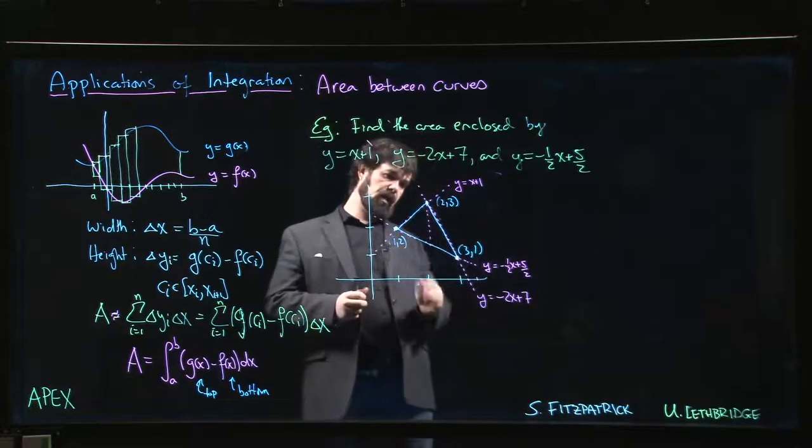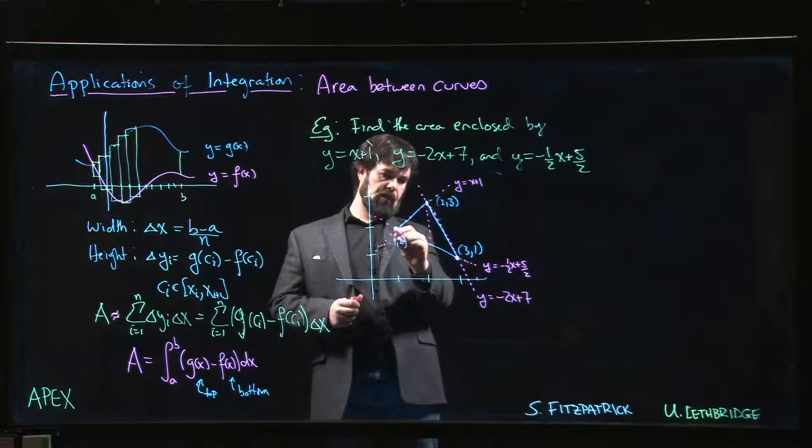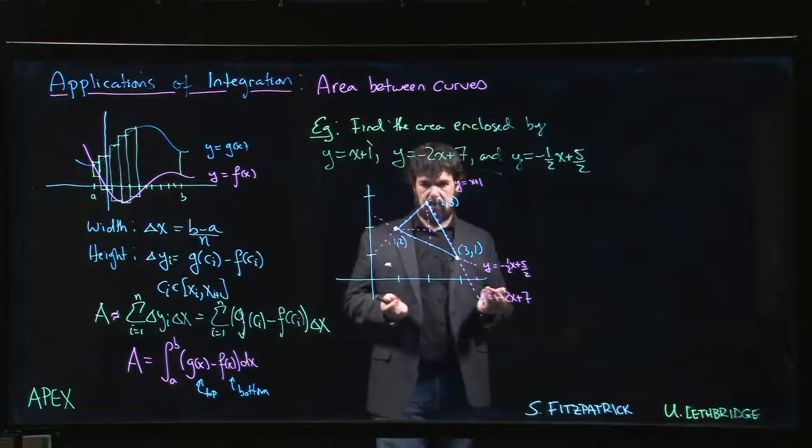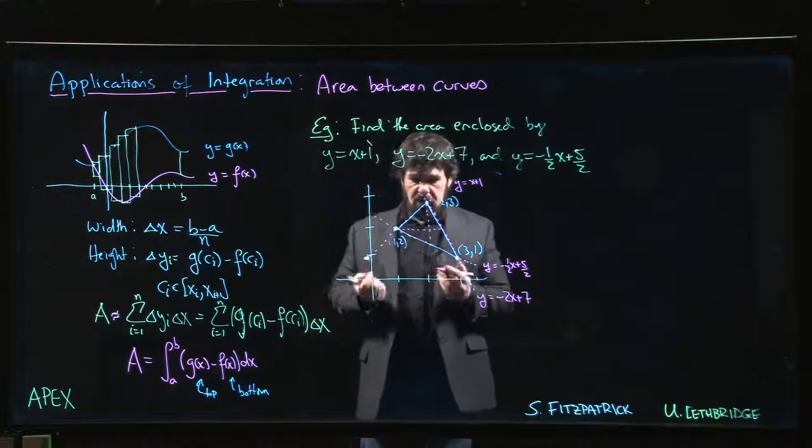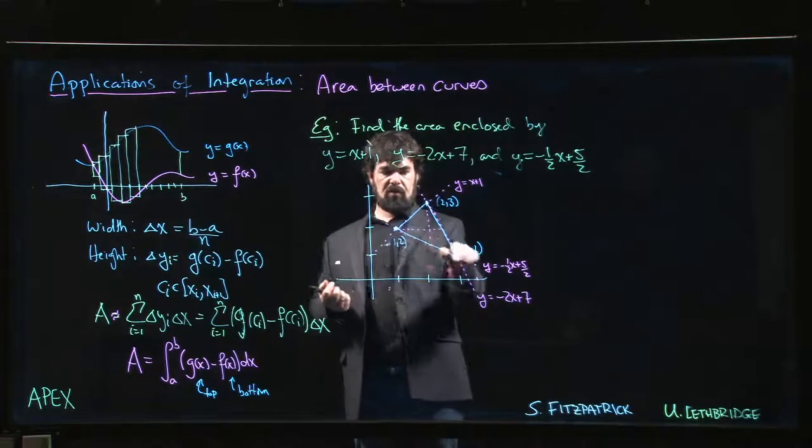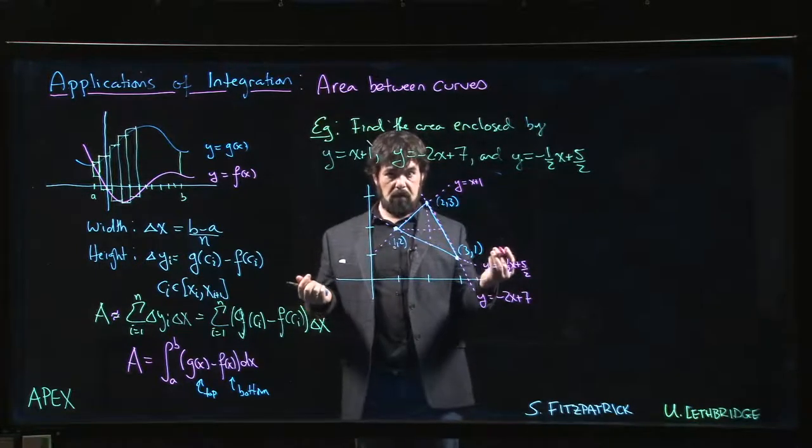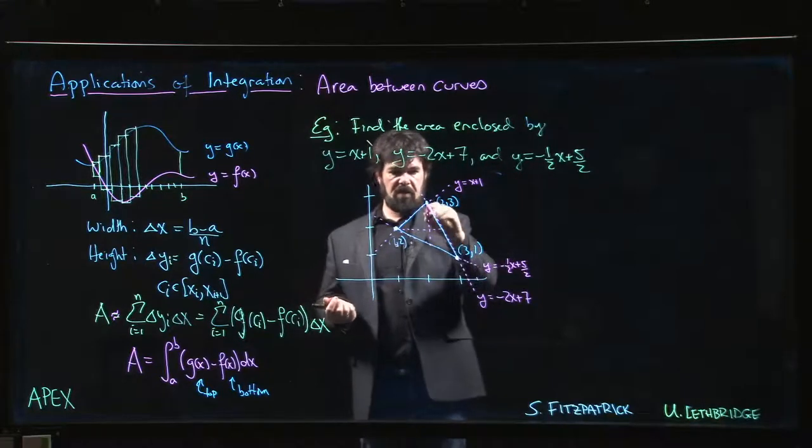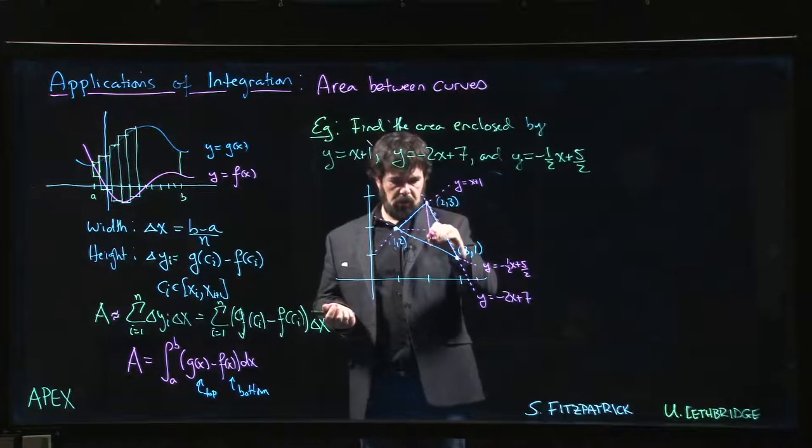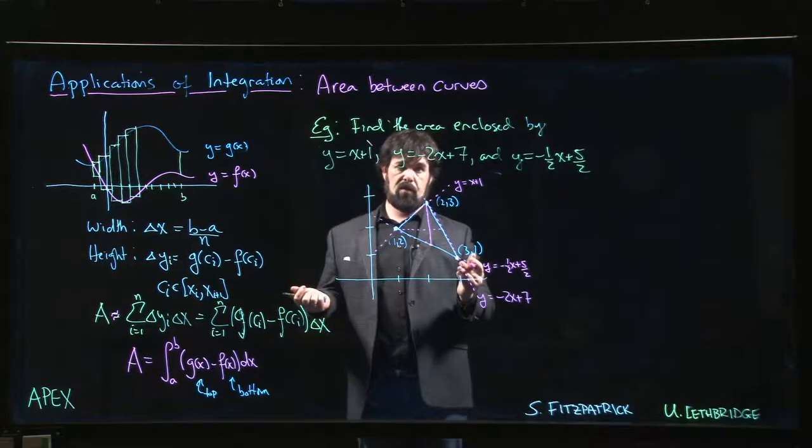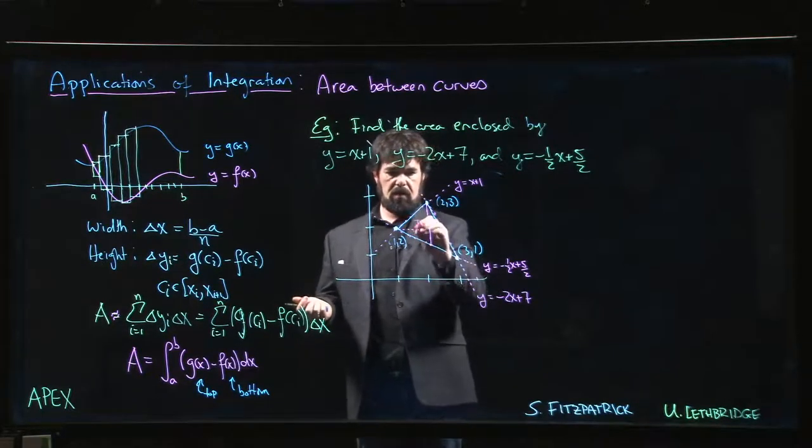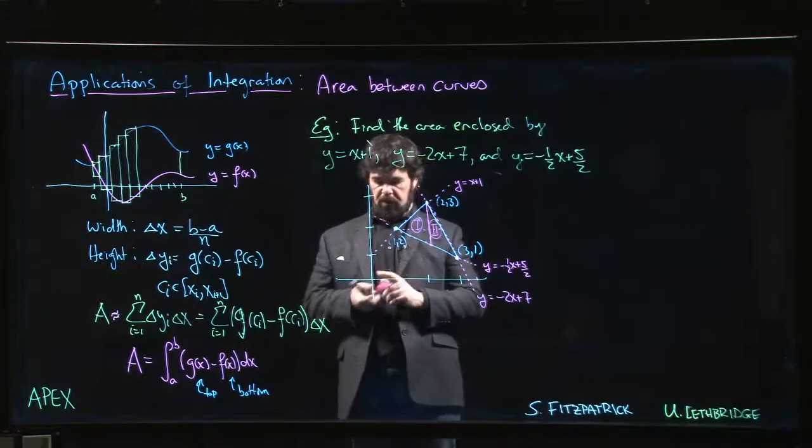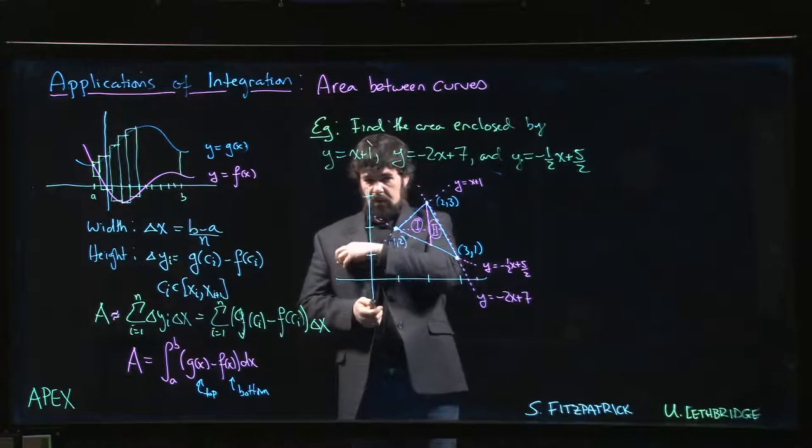If I wanted to integrate it with respect to y I could do it but then the bottom curve is going to change halfway through. So whichever way you do it you're going to have to split it up into two pieces because you're using different lines for boundaries of the region in different areas. We already have y as a function of x so it's going to be a little bit less work to do it the way we've got it set up. So we've got region 1, region 2 and we're gonna split things up. That's how we're gonna do it.